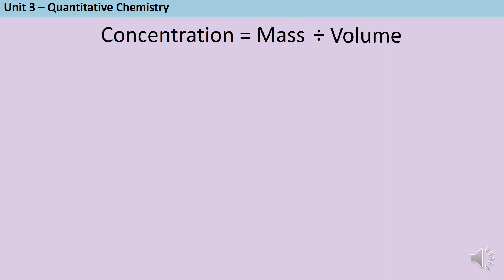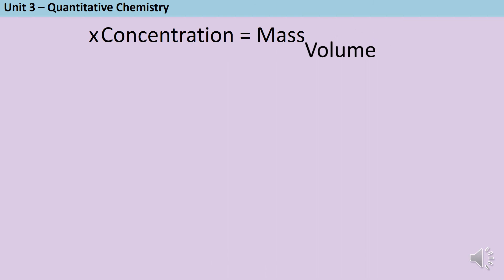The next step is to rearrange this equation so we can work out what mass of solute is required to make a certain volume of a solution of a certain concentration. Right now, mass is divided by volume and we want to get rid of that divide by volume. The way we do that is to apply the inverse operation — we times both sides of the equation by volume. So we get: mass equals volume multiplied by concentration.